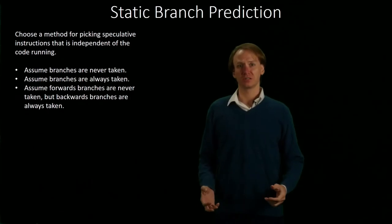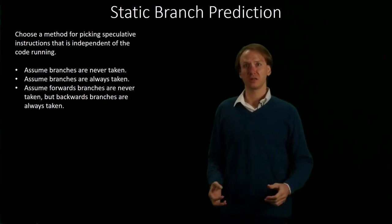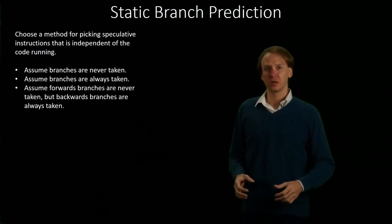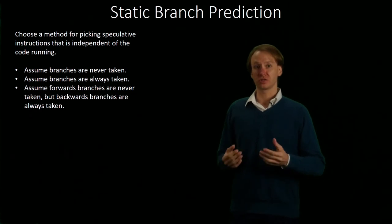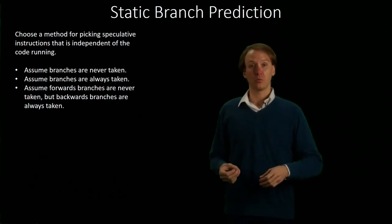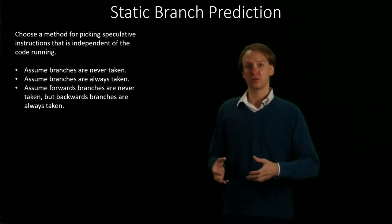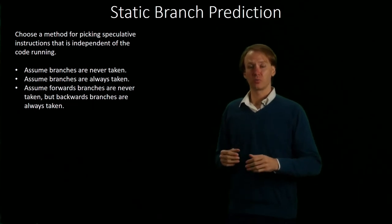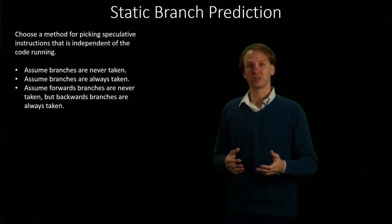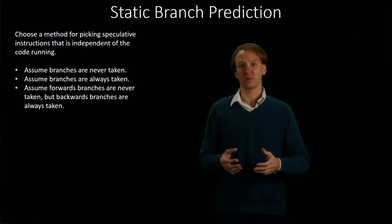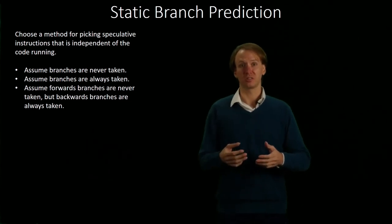Static branch prediction is the method of picking the speculative instruction based on just looking at the branch itself. We're not going to worry about what this branch has been doing. We may look at some of the parameters of the branch, but we're always going to do the same thing whenever we see a branch.